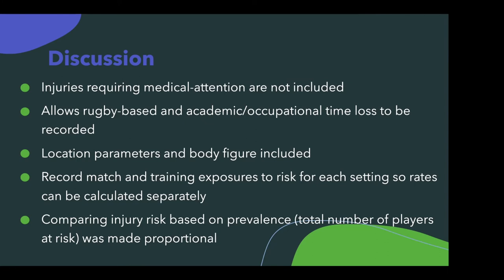They also recorded match and training exposures to risk differently based on the settings, because the level and type of exposure varies greatly amongst professional and community-based rugby players. If exposure is the denominator and the number of reported injuries is the numerator, the calculation gives incidence. They decided to use this as the manner of calculating incidence because it was more inclusive for both community-based and professional players, as it varied less when calculated this way.